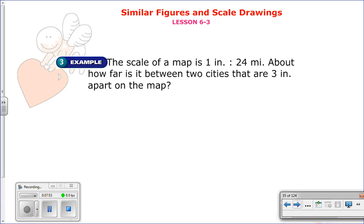So here's what they give us. The scale of a map is 1 inch is to 24 miles. About how far is it between the two cities that are 3 inches apart on the map? So what they're telling us here is every inch that's shown on the map is actually 24 miles. And if you didn't notice here, this is actually a rate. They're telling us, it's a rate. They're telling us 1 inch is to 24 miles. So really, it's a ratio. I had that wrong. 1 inch is to 24 miles. Right? Now, that's one part of our proportion. Right here. 1 to 24.